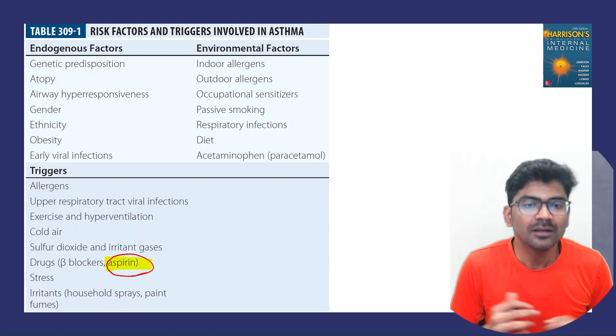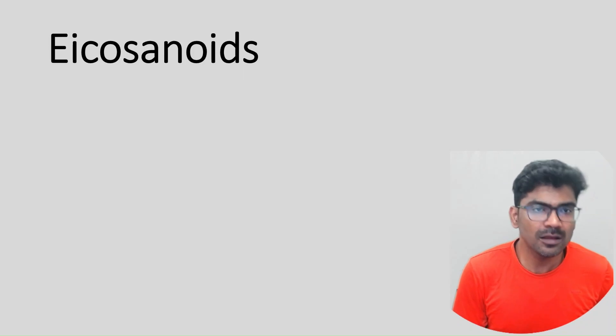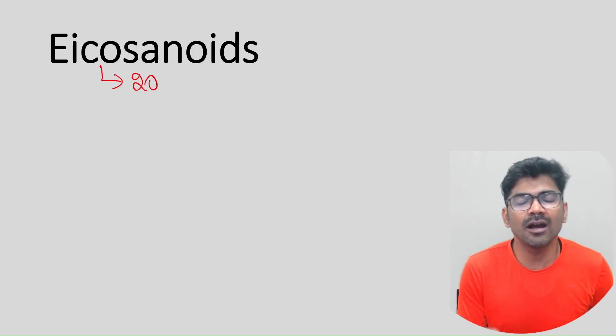Why? To understand that, let us refresh our knowledge on eicosanoids. Ecosa means 20. The eicosanoids are 20-carbon paracrine messengers.